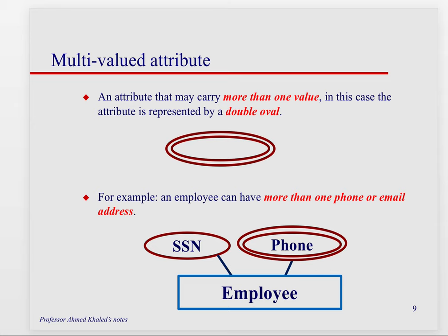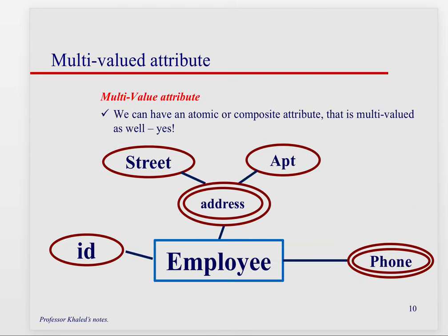Then we get to the case where phone number might have multiple values — a work phone number and a cell phone number. If you want to show that someone has more than one phone number, you use the double oval notation. That shows there's more than one. The same applies to email address or physical address if someone can have multiple in your database.